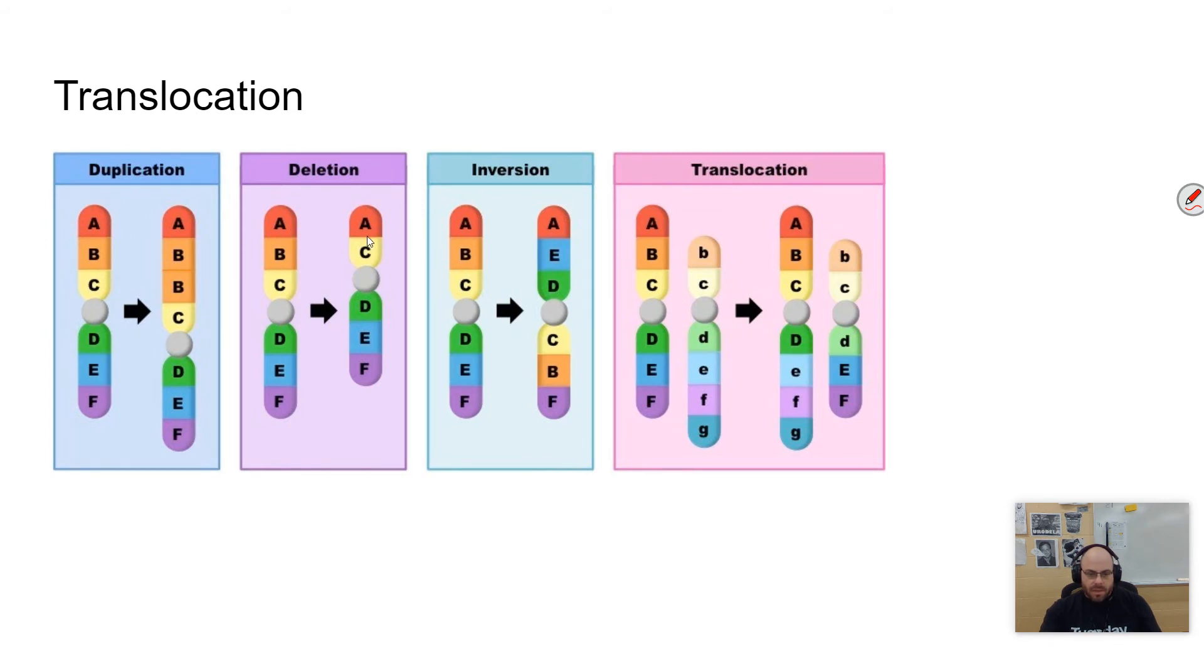Or one of those sections becomes deleted, or an entire section of a chromosome becomes inverted. So instead of A, B, C, you have, then you have C, B backwards and E, D backwards here. So that's kind of what's going on. Translocation is literally where part of a chromosome just changes location and becomes a part of a different chromosome. And so that can happen as well.